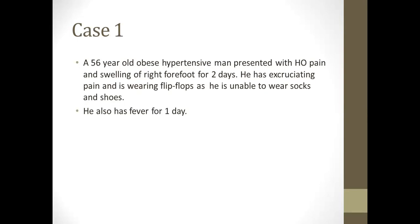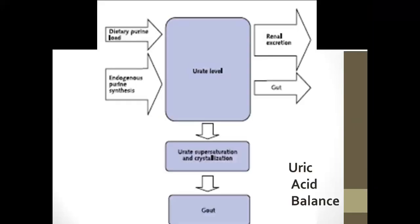Think about this case: a 56-year-old obese hypertensive man presented with history of pain and swelling of the right forefoot for two days. He has excruciating pain and is wearing flip-flops as he's unable to wear his socks and shoes, and he has fever for one day. When you examine the patient, you find that the patient has got an inflamed right metatarsophalangeal joint, and you think the patient has got gout.